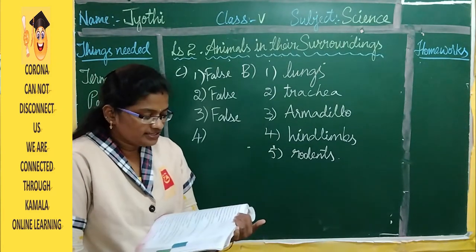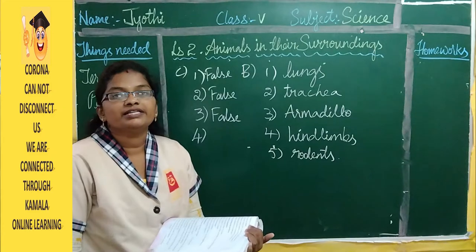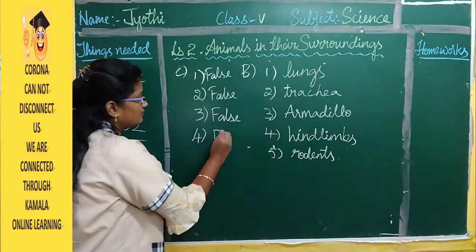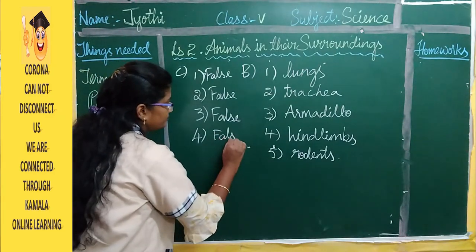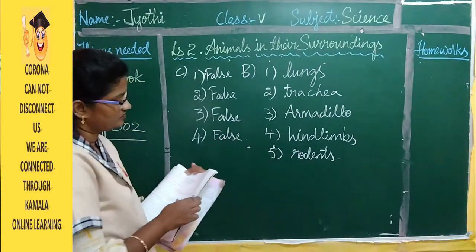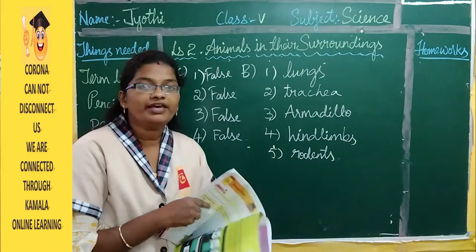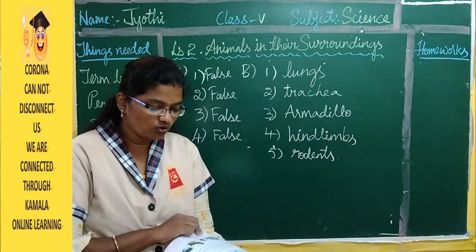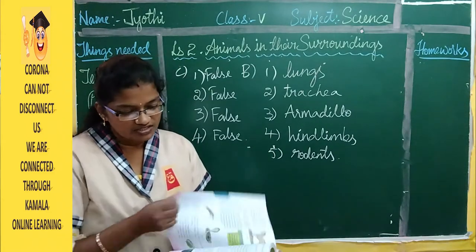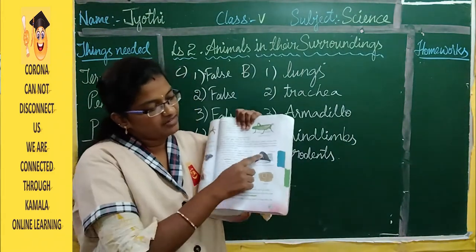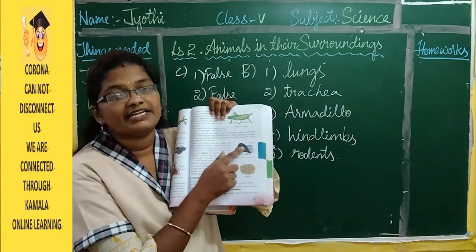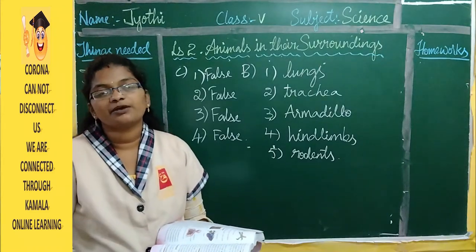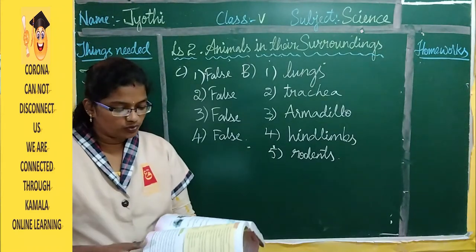True or False: Whales breathe through gills — this is also false. Whales have a hole on their head called the blowhole. Whales and dolphins breathe through the blowhole.